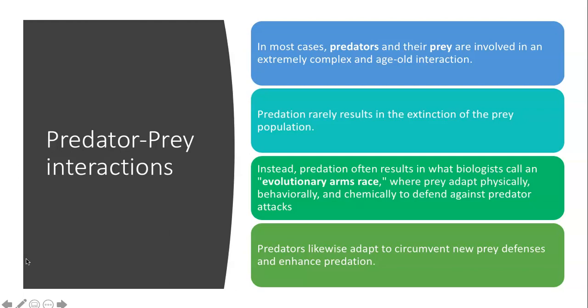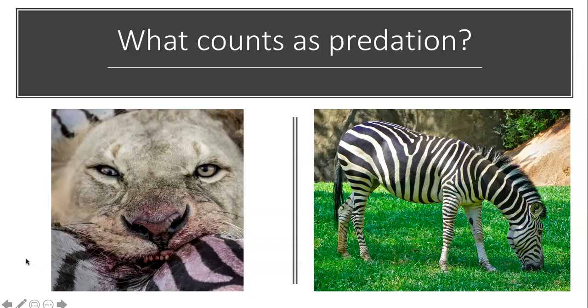And what we'll also see eventually is that predators adapt to circumvent these defenses and enhance their predation. One thing I want to talk about is what counts as predation — I talked about this in our last video, but some of us weren't quite sure when we took the lab quiz. When I first say predation, you would probably think about a lion that took down a zebra.